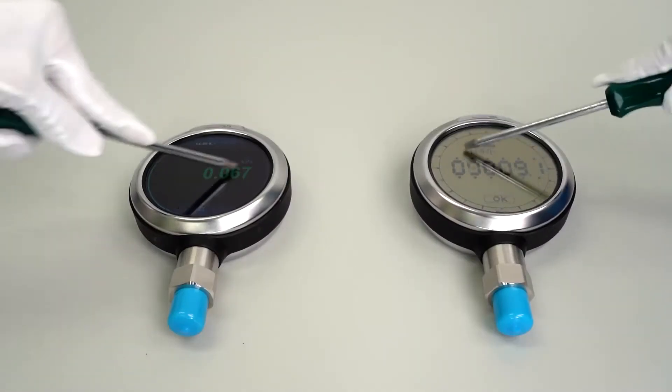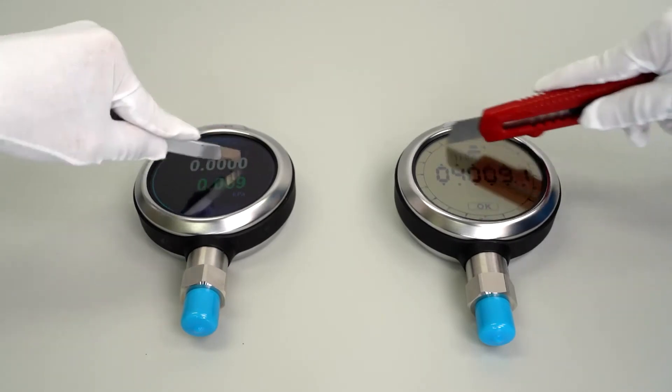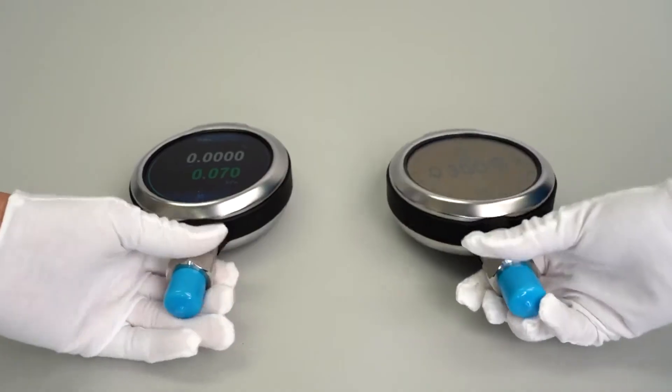Our last test is to simulate possible scratching. As you can see, a sharp knife and screwdriver are used to cut the screen to no avail.